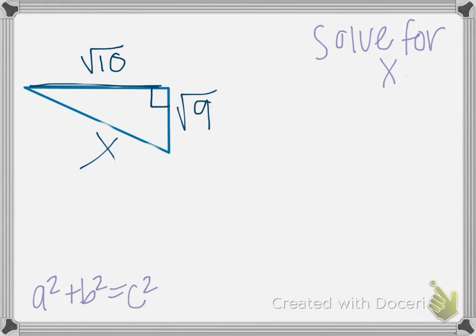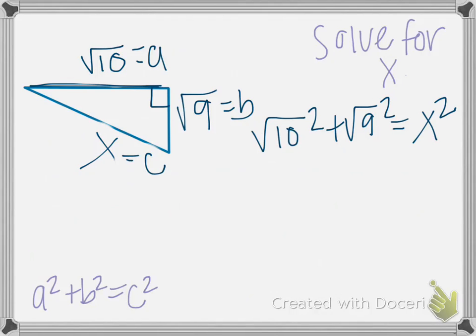We'll try one more solving for the hypotenuse. Let's let square root of 10 equal A, square root of 19 equal B, and X equals C. Then plugging these into our equation, we have the square root of 10 squared plus the square root of 9 squared equals X squared. These cancel out, and we're left with 10 plus 19 equals X squared.